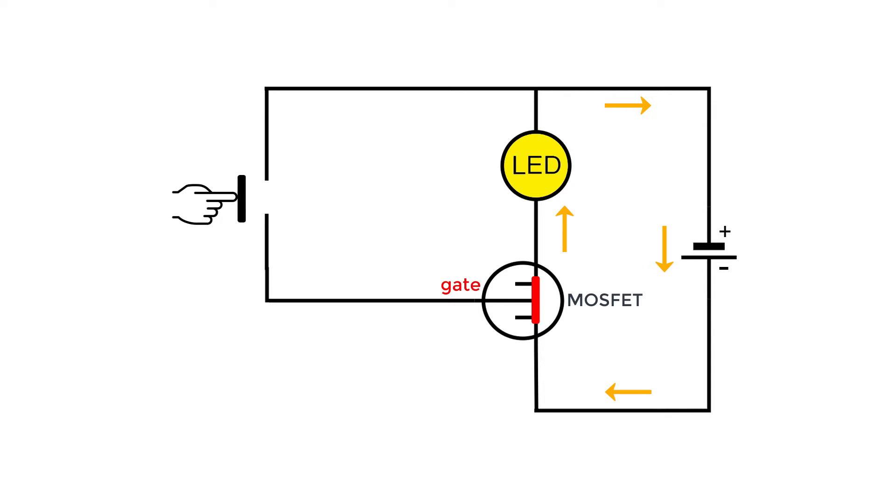However, if we remove the voltage, the MOSFET switches off and the LED also switches off because there is now an open circuit. The MOSFET is off, or you can say that the switch is open.